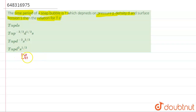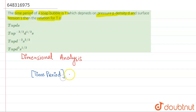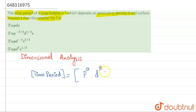We have to use dimensional analysis. The time period T is proportional to pressure p to the power alpha, density d to the power beta, and surface tension s to the power gamma. We need to find these exponents alpha, beta, and gamma.